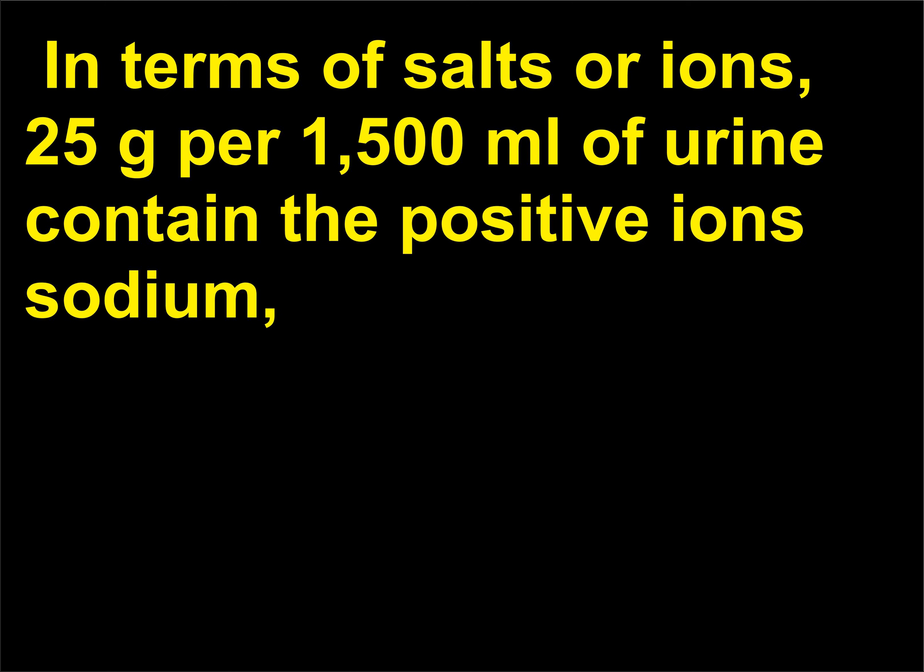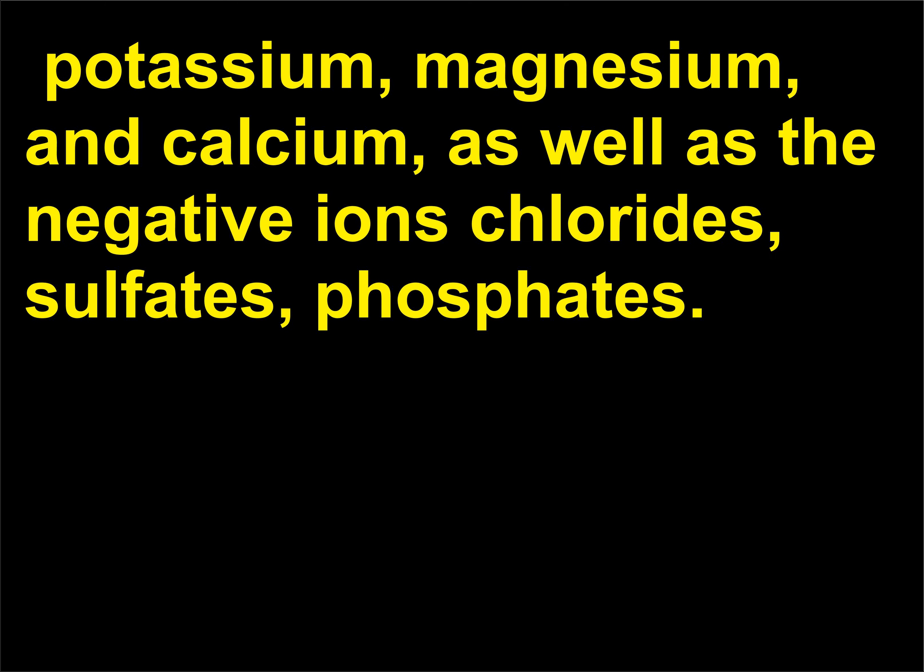In terms of salts or ions, 25 g per 1500 ml of urine contain the positive ions sodium, potassium, magnesium, and calcium, as well as the negative ions chlorides, sulfates, and phosphates.